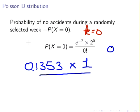So it's 0.1353 times 1 divided by 1. The answer here is 0.1353, which is about 13.5 percent.